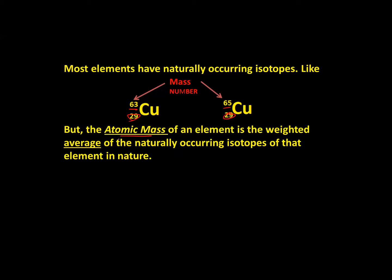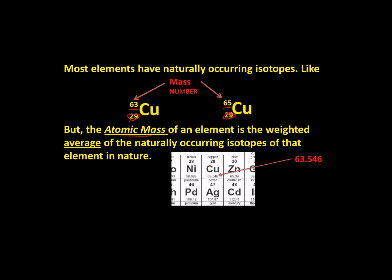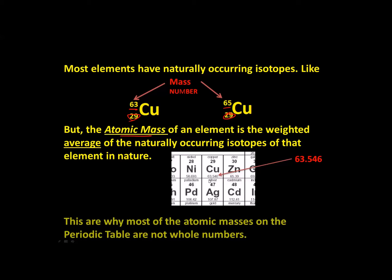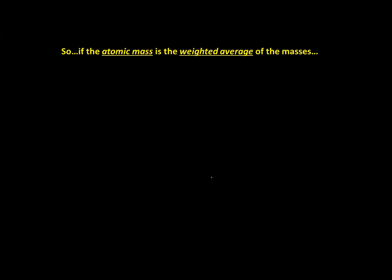But the atomic mass is not the same as mass number. The atomic mass of an element is the weighted average of the naturally occurring isotopes of that particular element found in nature — or in any sample of that element. Look on a periodic table and you can see that the weighted average of copper isotopes found in nature is 63.546. This is why most of the atomic masses on the periodic table are not whole numbers — they are in fact averages of all the isotopes of that element found in nature.